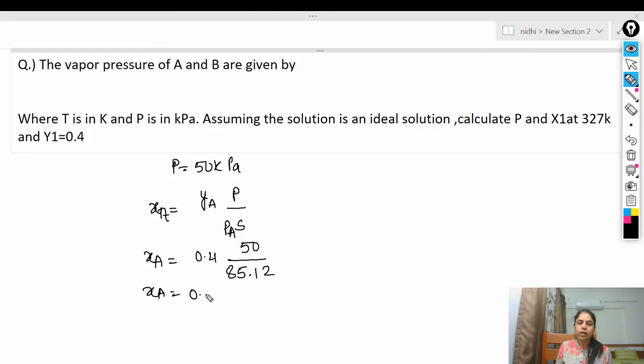Similarly you can find x_B also. The formula for x_B is x_B = Y_B × P / P_B^s. From this you will get the value 0.7635. Of course you can check: if x_A + x_B = 1, if it is 0.236 + 0.7635, then x_B equals 0.7635, which confirms our answer.